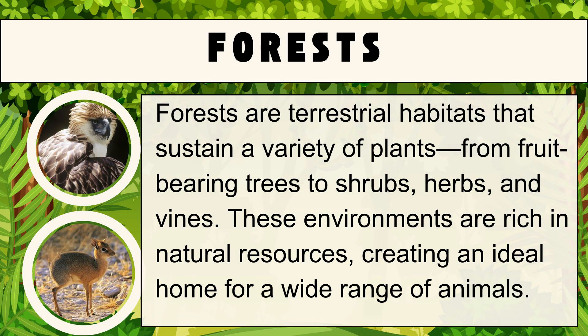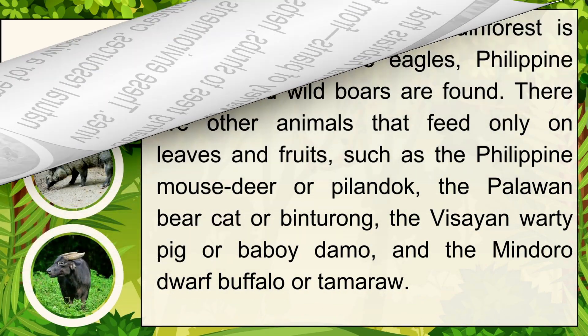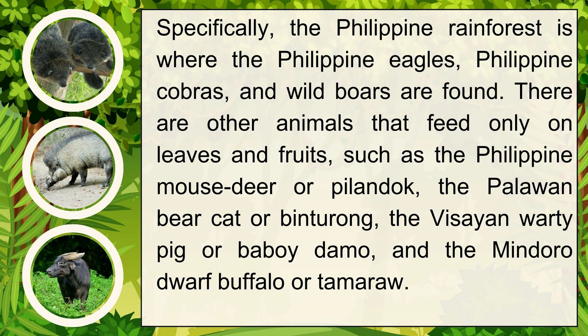Here are the main types of terrestrial habitats. First, forests are terrestrial habitats that sustain a variety of plants, from fruit-bearing trees to shrubs, herbs, and vines. These environments are rich in natural resources, creating an ideal home for a wide range of animals. Specifically, the Philippine rainforest is where the Philippine eagles, Philippine cobras, and wild boars are found.